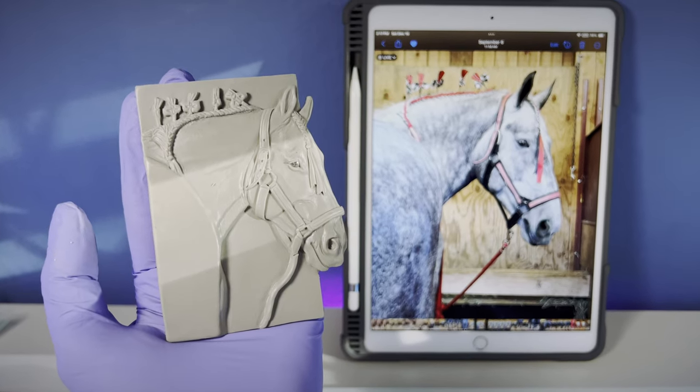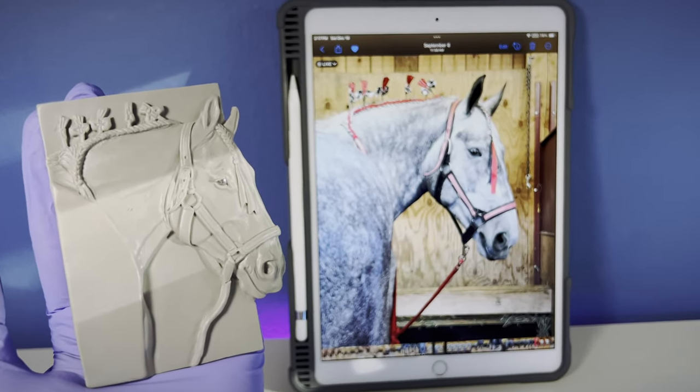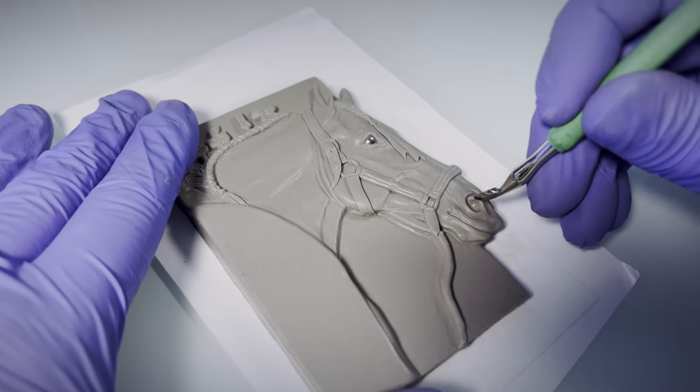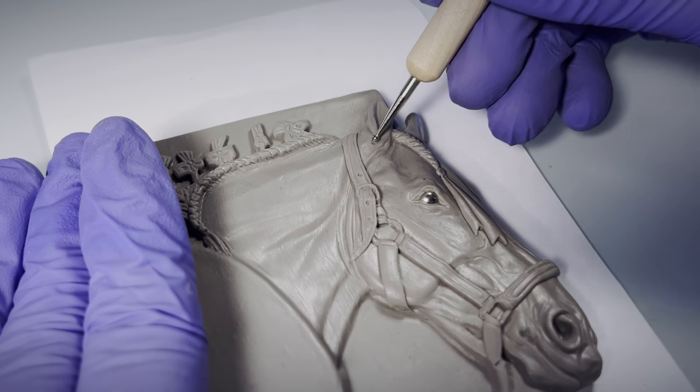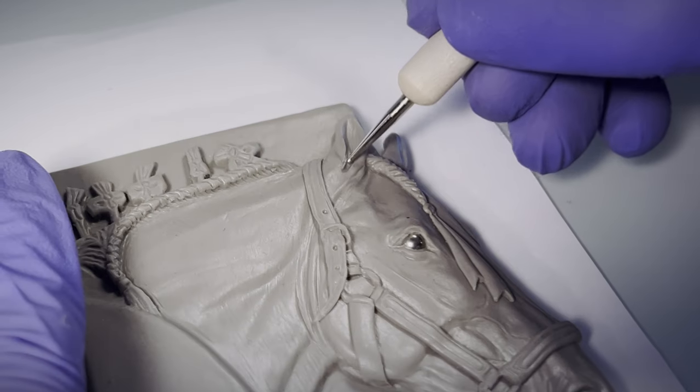I check my progress against my reference again and make adjustments to the edges of the face, lips, nostrils, and size of the ears. I think that really helped bring back some of the likeness of that particular Percheron.